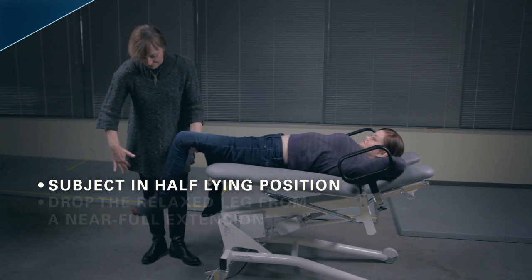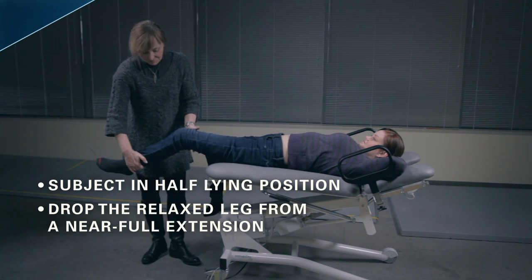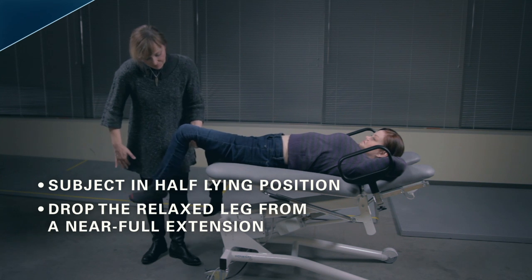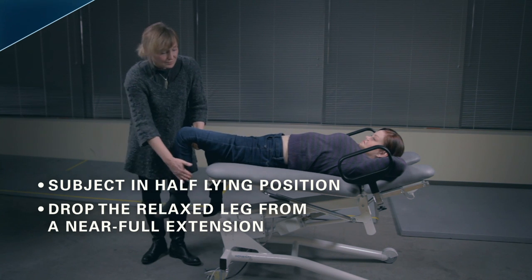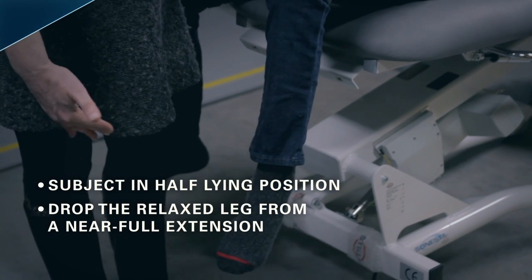To perform the test, the patient is instructed to relax his or her knee. The examiner then lifts the relaxed lower limb to a near full extension position, extending the knee against gravity, and releases the limb, letting it fall and swing freely.